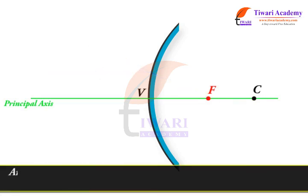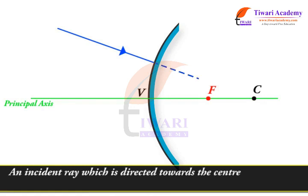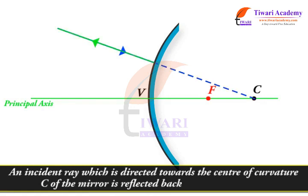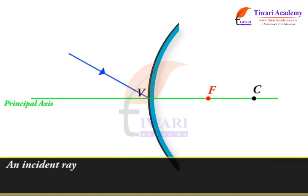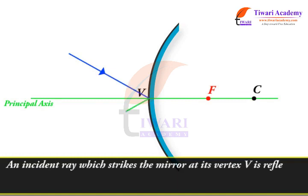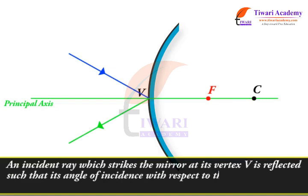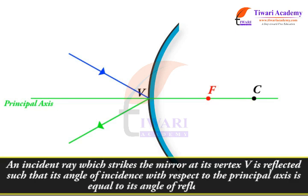An incident ray which is directed towards the center of curvature C of the mirror is reflected back along its own path. An incident ray which strikes the mirror at its vertex V is reflected such that its angle of incidence with respect to the principal axis is equal to its angle of reflection.